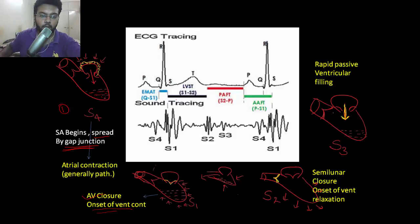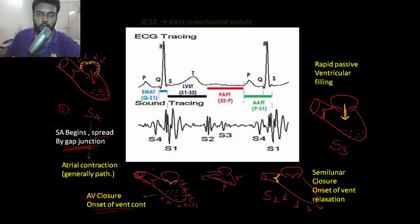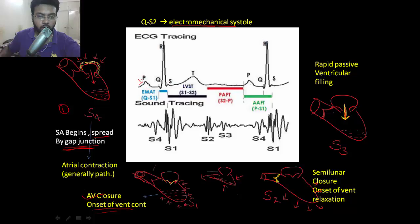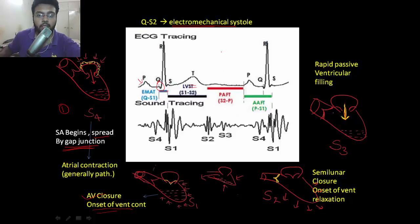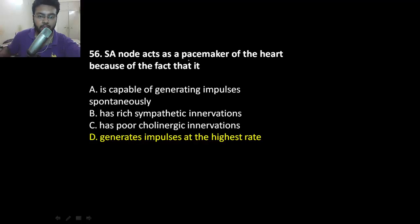Remember, ventricular filling due to atrial contraction is active — there is no atrial contraction in the third heart sound. On the ECG: P marks atrial contraction, QRS marks ventricular depolarization, and T is ventricular repolarization. Electrically, systole is marked by the Q wave; mechanically, systole ends at the onset of ventricular relaxation, which corresponds to the second heart sound. Therefore, the Q-S2 interval is called electromechanical systole.